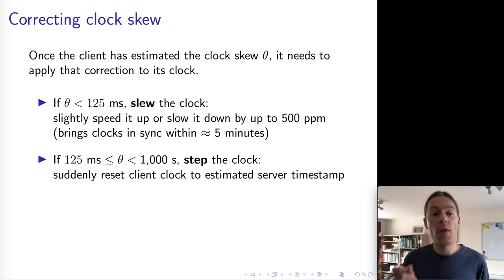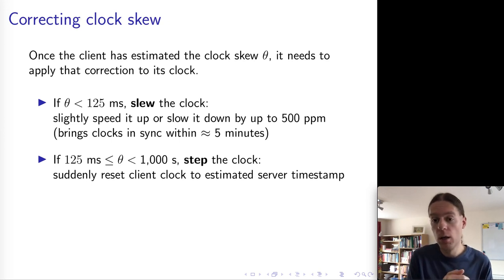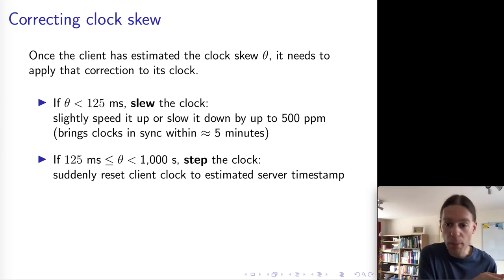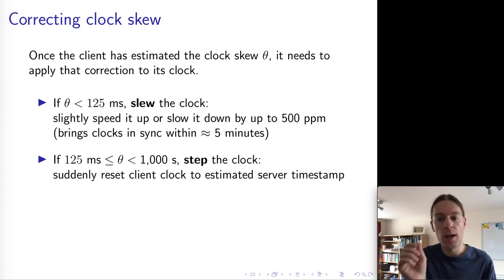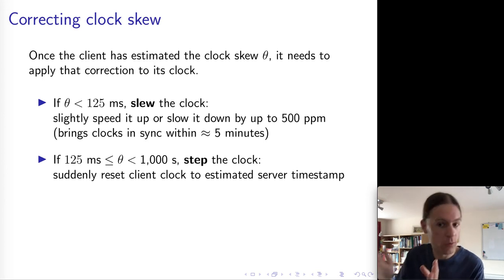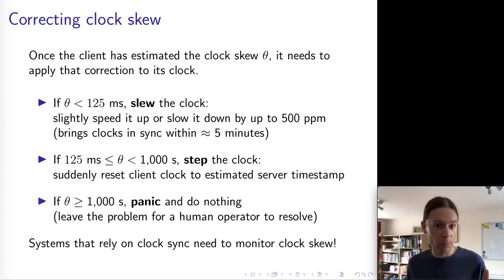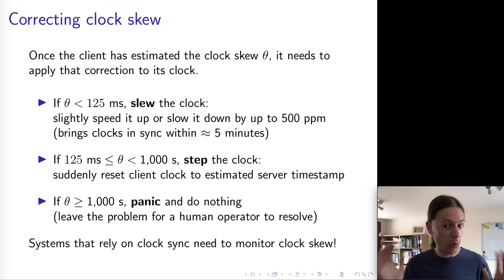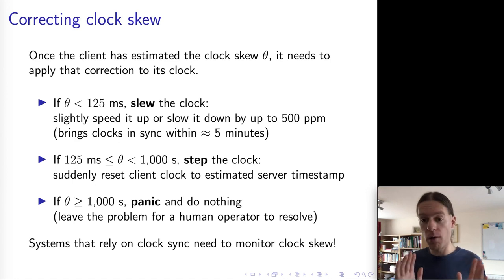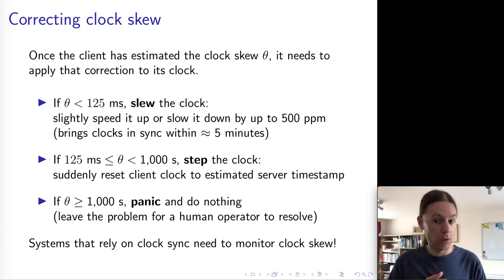If the skew is too big, NTP will step the clock — forcibly adjusting it, which may mean moving it backwards or forwards, jumping directly to the timestamp estimated from the server clock. From then onwards NTP tries to do everything smoothly, but there is an initial discontinuity. Finally, if NTP decides the skew is so large that something has clearly gone very wrong, it enters a panic state and refuses to adjust the clock at all, leaving the correction for a human operator to resolve.